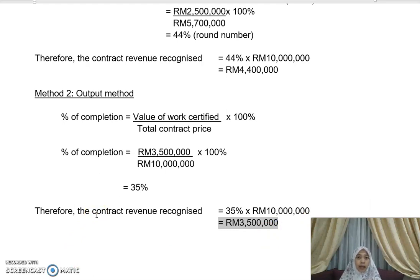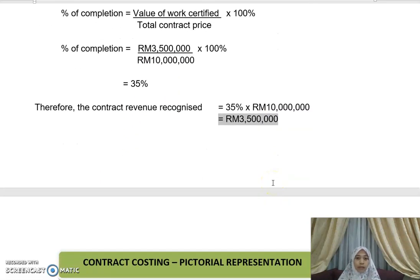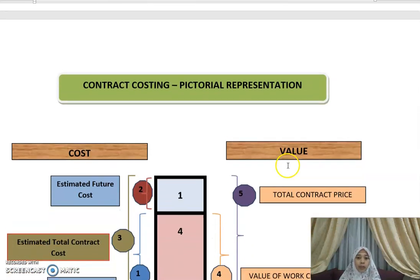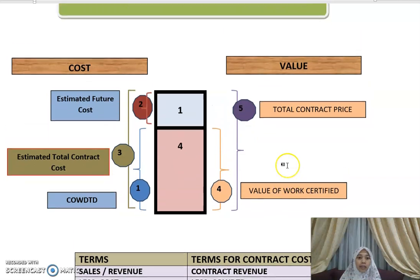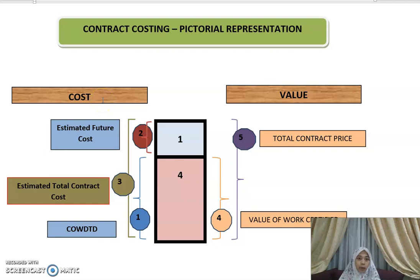Let me provide a recap with a pictorial representation to help you understand better. If you are using the cost method — the input basis — imagine you are building a five-story building and up to today you have already completed the fourth story.